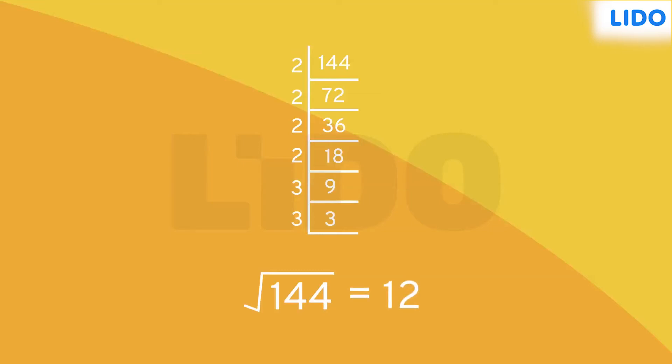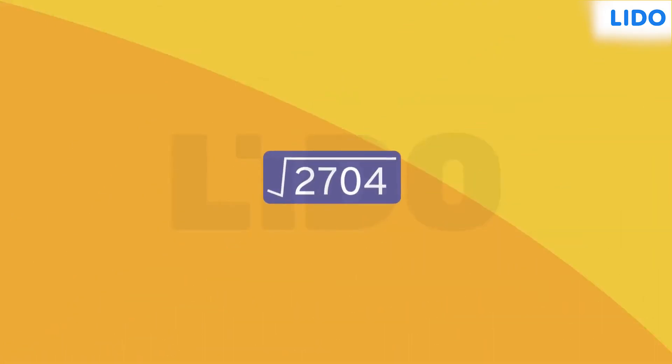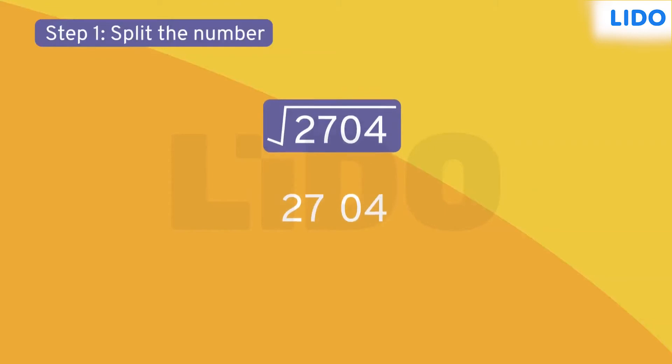Let's learn about a trick to find the square root of a 4-digit number. The first step is to separate the digits of the number such that the last two digits form the second part and the remaining digits form the first part.